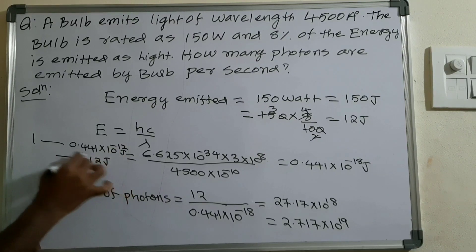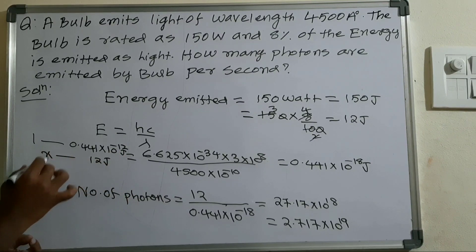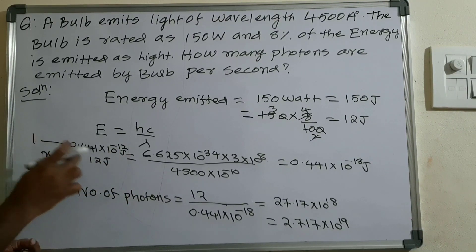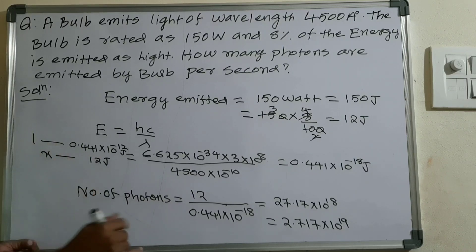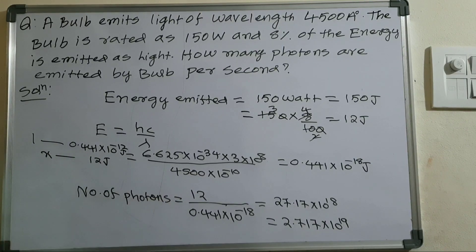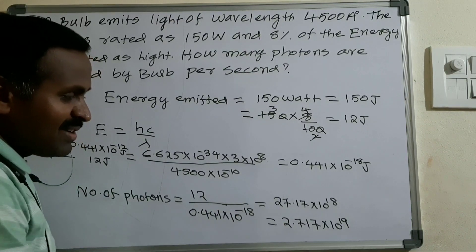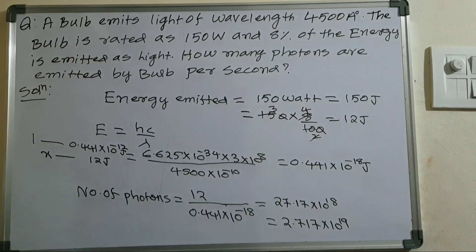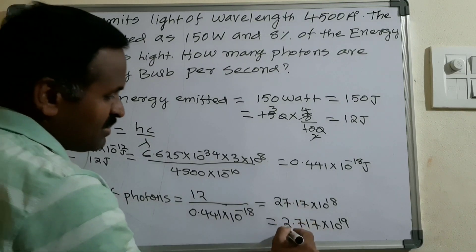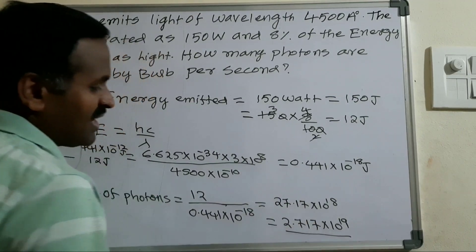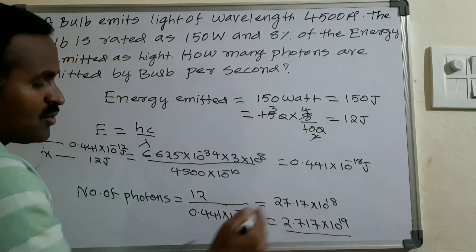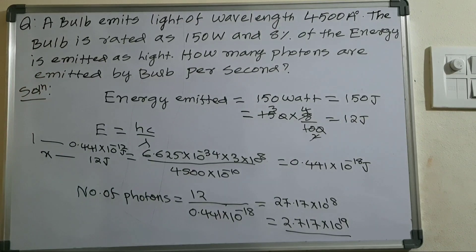The total energy is 12 joules. One photon has energy 0.441 into 10 power minus 18 joules. The number of photons x equals 12 divided by 0.441 into 10 power minus 18. After simplification you get 27.17 into 10 power 18, or equivalently 2.717 into 10 power 19 photons.